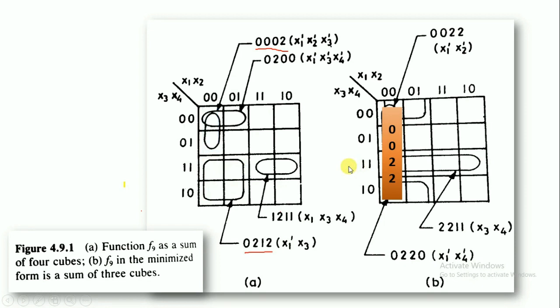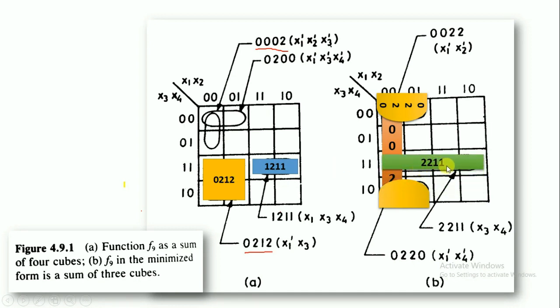Again we take the 0212 cube and the 0200 cube. By combining these two cubes, you will get 0220. Next, we take the cube 1211 and combine it with 0212, so you will get 0211.